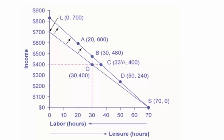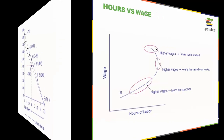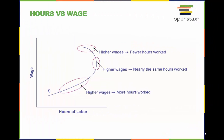Here is an interesting supply curve which shows us the supply of labor. The bottom upward-sloping portion of the labor supply curve shows us that as wages increase over this range, the quantity of hours worked also increases.